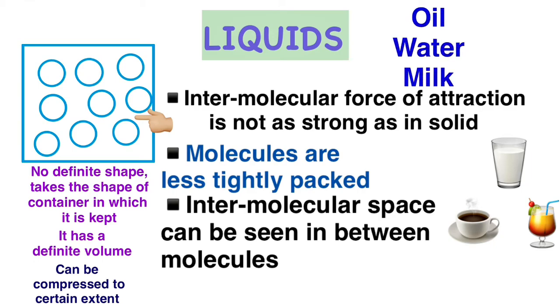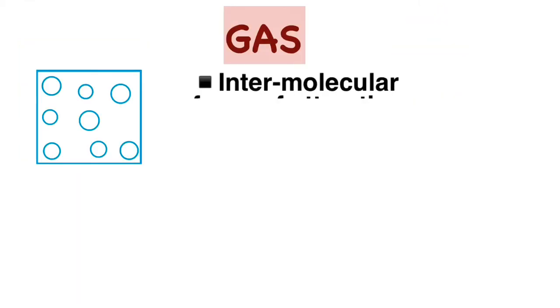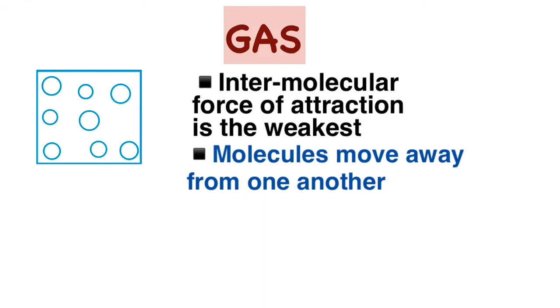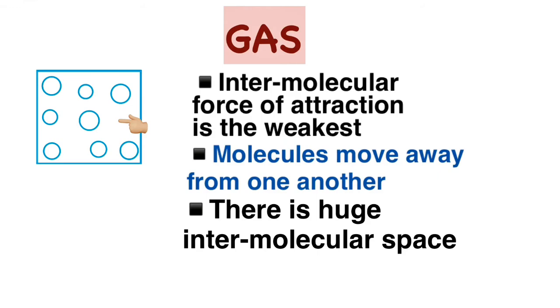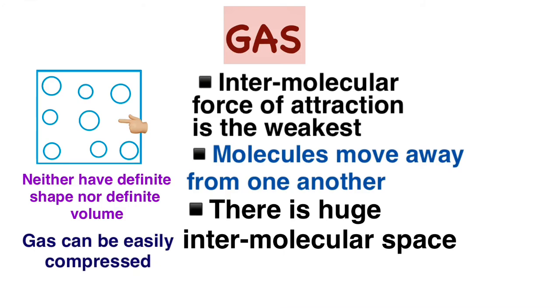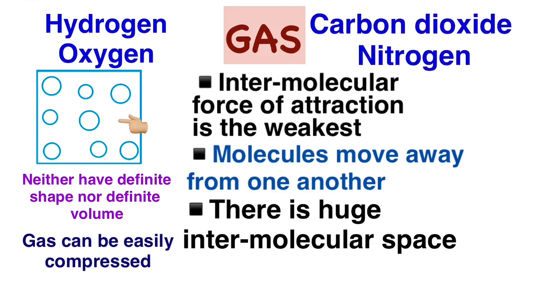In gas, the intermolecular force of attraction is the weakest. That is why the molecules tend to move away from one another and we can see a huge intermolecular space in between the molecules. So a gas has neither a definite shape nor a definite volume, and hence a gas can be easily compressed. Hydrogen, oxygen, carbon dioxide, and nitrogen are examples of gases.